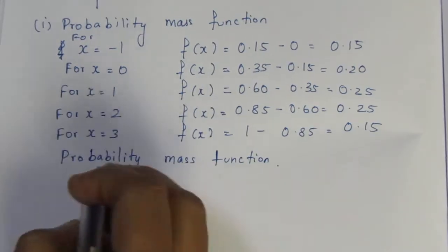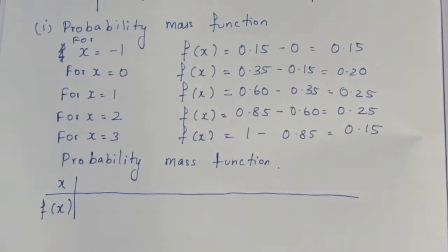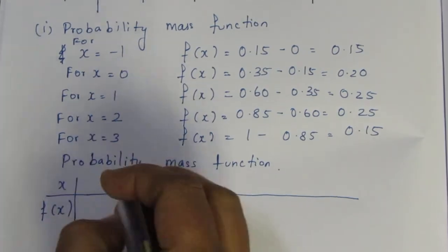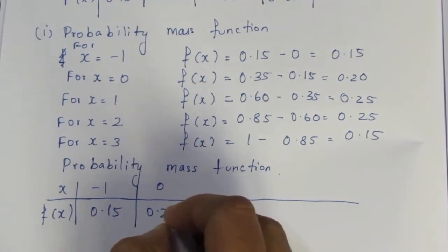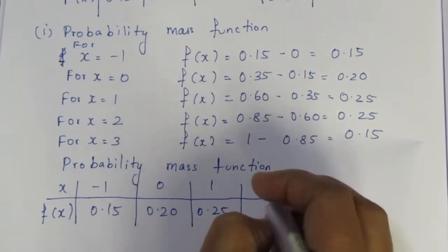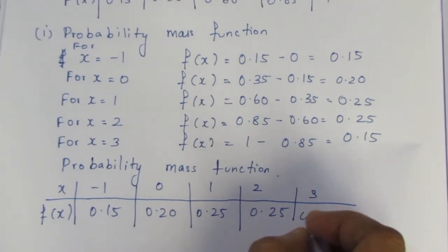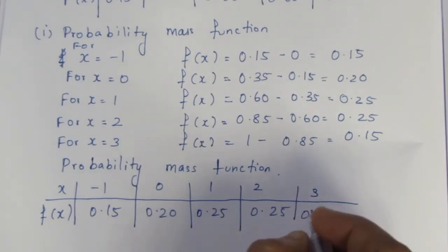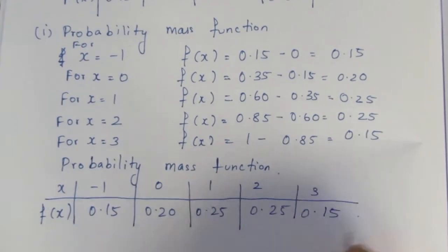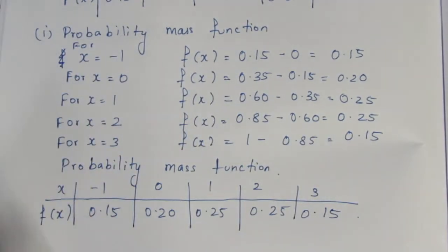Now we build the table. The columns are x, small f of x (PMF), and capital F of x (CDF). Values: x = -1: f(x) = 0.15; x = 0: f(x) = 0.20; x = 1: f(x) = 0.25; x = 2: f(x) = 0.25; x = 3: f(x) = 0.15. This is the probability mass function answer.